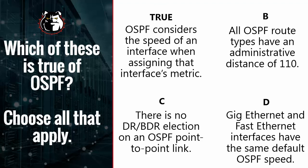B: All OSPF route types have an administrative distance of 110 — that is absolutely true. There are actually six route types or route codes that can be assigned to OSPF routes. You won't see them all during your CCNA studies, but they all have an administrative distance of 110 by default, unlike EIGRP, which has different ADs for internal and external routes.